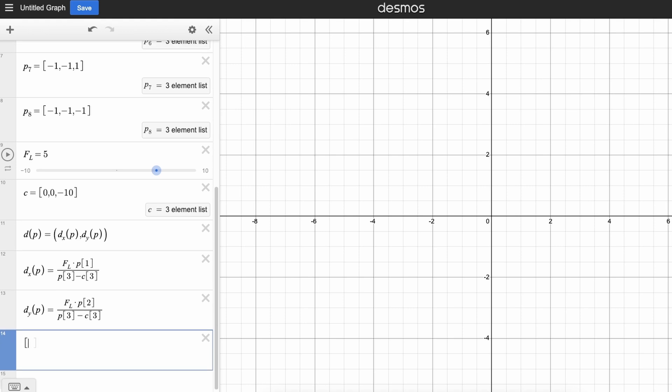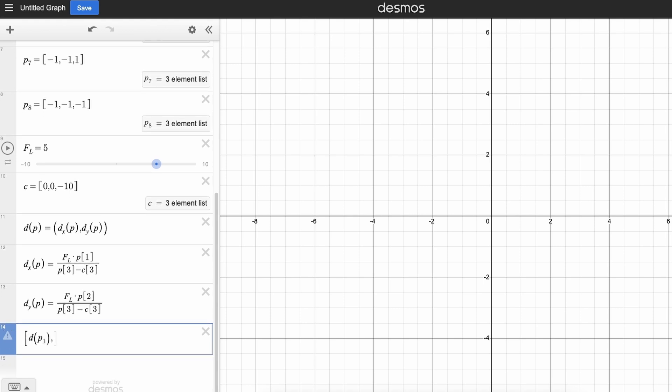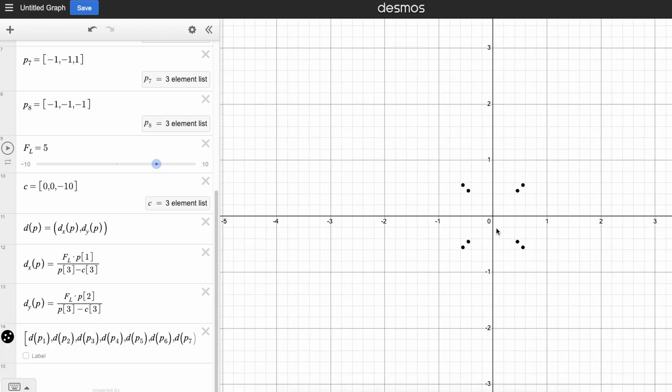So to display all of them, we're going to make a new array, and then in the array, we're going to put D of P1, D of P2, D of P3, all the way up to P8. And there we have it. That's our cube.